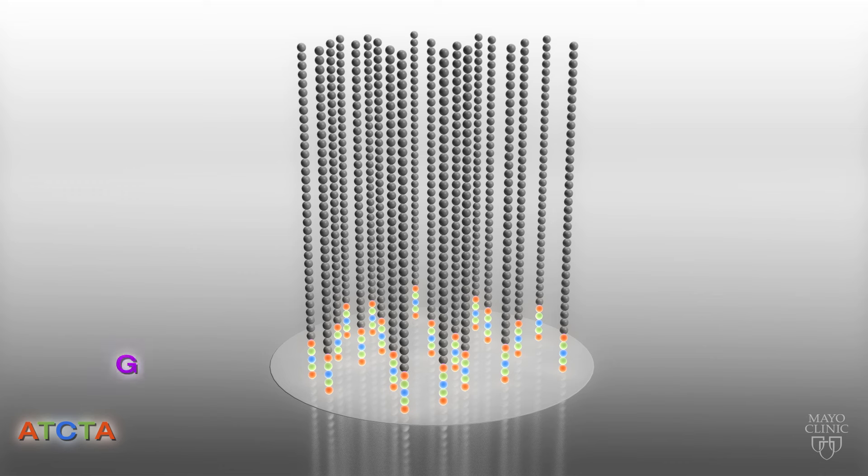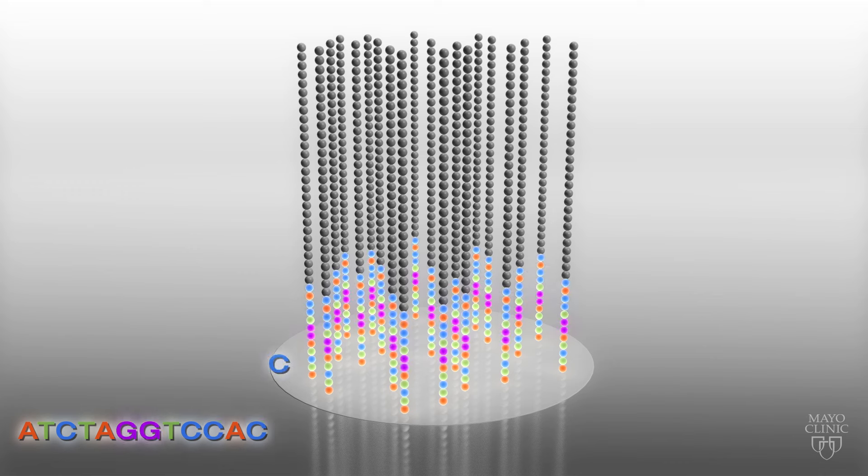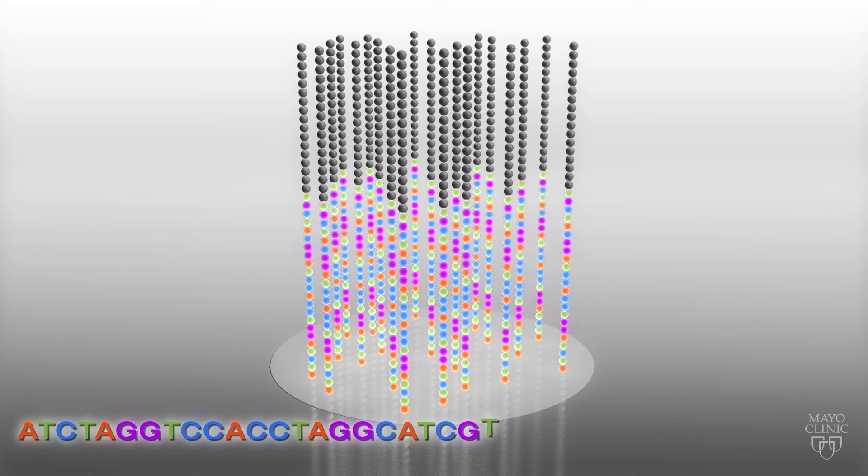Next, the sequencer reads the DNA, one base at a time, using different colored tags for each DNA base.